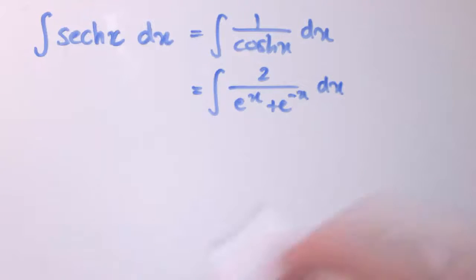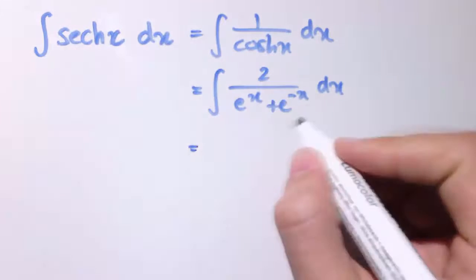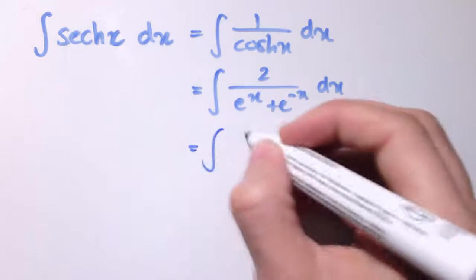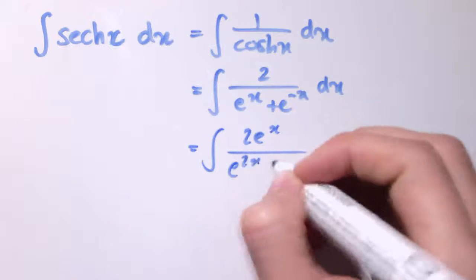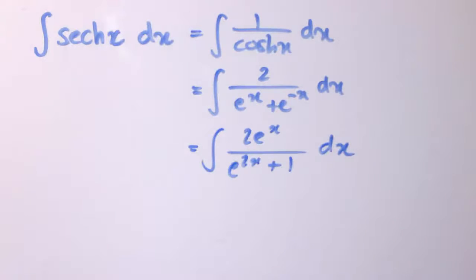And if we multiply top and bottom by e^x here, we get 2e^x over e^(2x) plus 1 dx. This one's a bit harder, because that's not the end. We're going to have to make a substitution now.